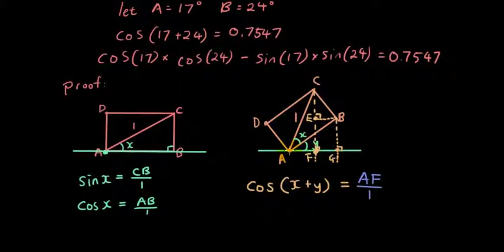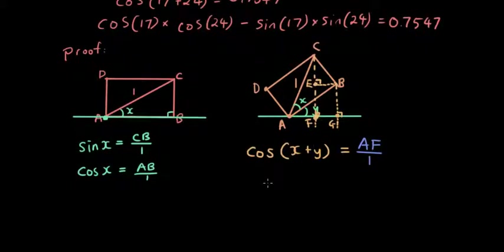Now where does the side AF come from? Well the side AF comes from AG, which is this long line, minus FG, which is this line here. So if we can figure out an expression for AG and we can take away FG, then we've solved the problem.